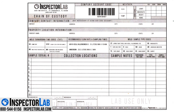The original chain of custody form is maintained at Inspector Lab. However, a completed chain of custody that includes all the signatures detailing who handled, analyzed, and reported the samples is scanned and uploaded on the Inspector Lab website and is available to you when the report is released.